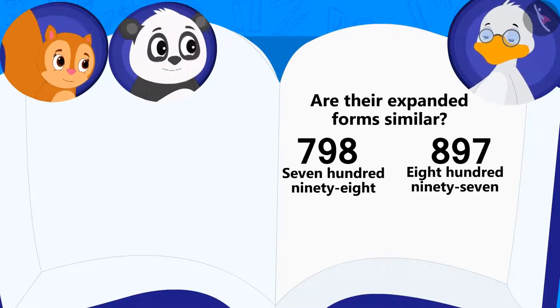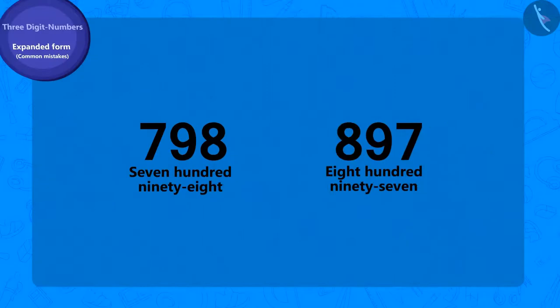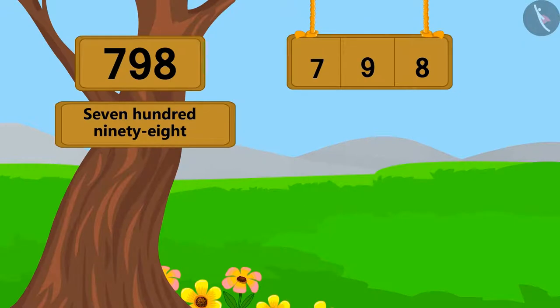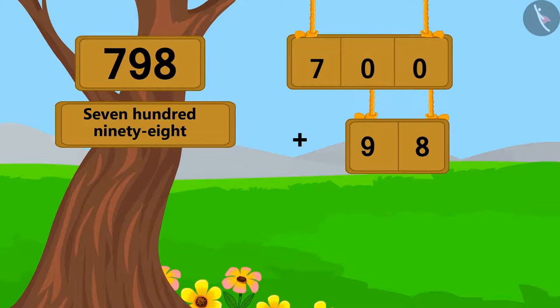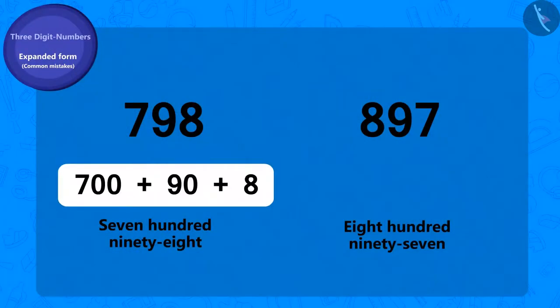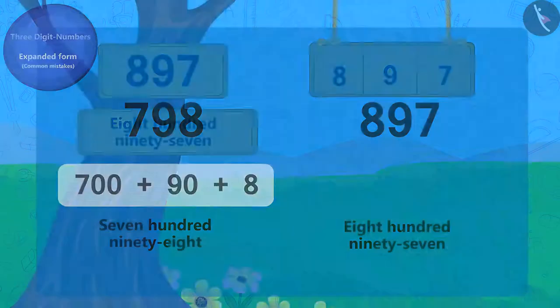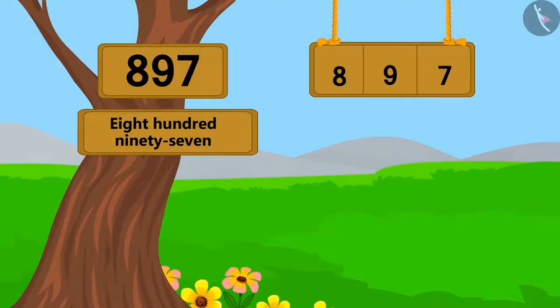To solve this riddle, we will have to write the expanded form of both the numbers. We can write the expanded form of 798 like this. And 897 can be written in expanded form like this.